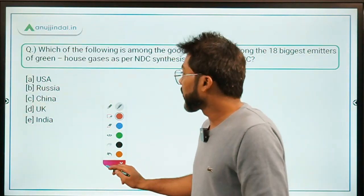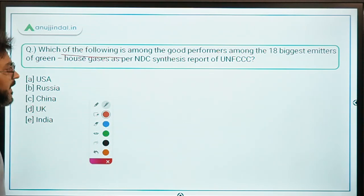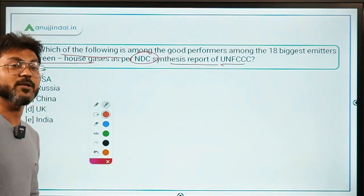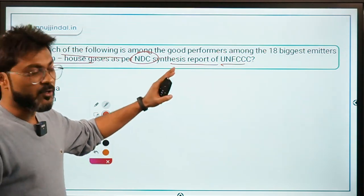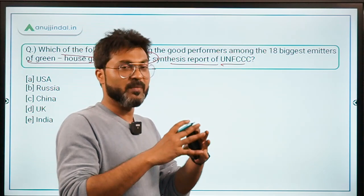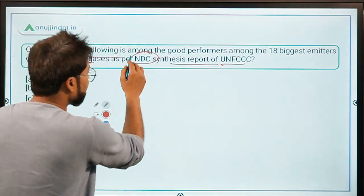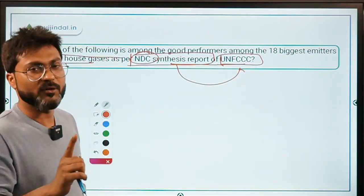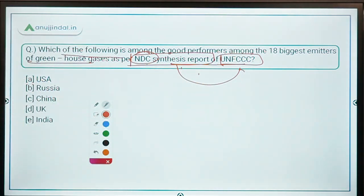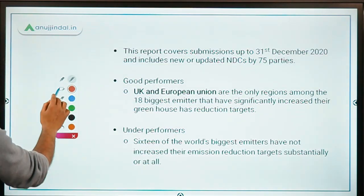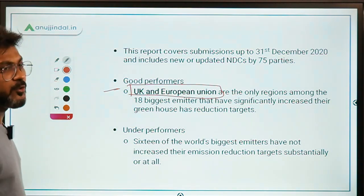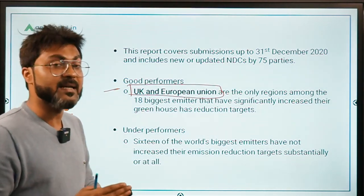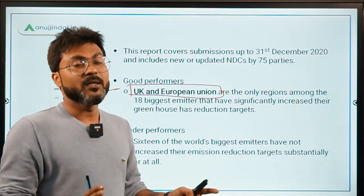Question 2: Which of the following is among the good performers among the 18 biggest emitters of greenhouse gases, as per the NDC Synthesis Report released by UNFCCC? In this report, just remember that the NDC Synthesis Report has been launched by UNFCCC. The good performers are UK and European Union — they have controlled their greenhouse gas emissions among the top 18 emitters.